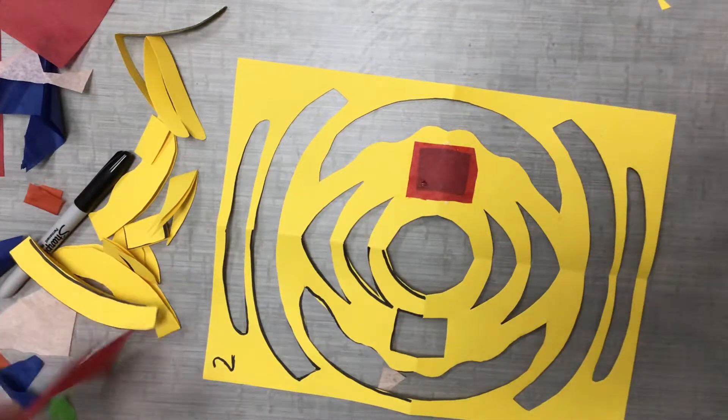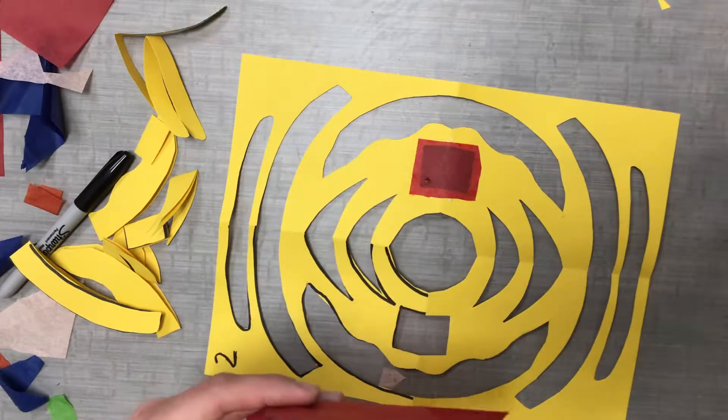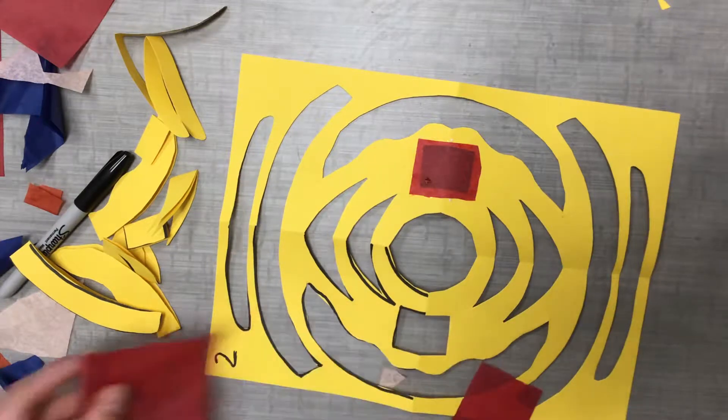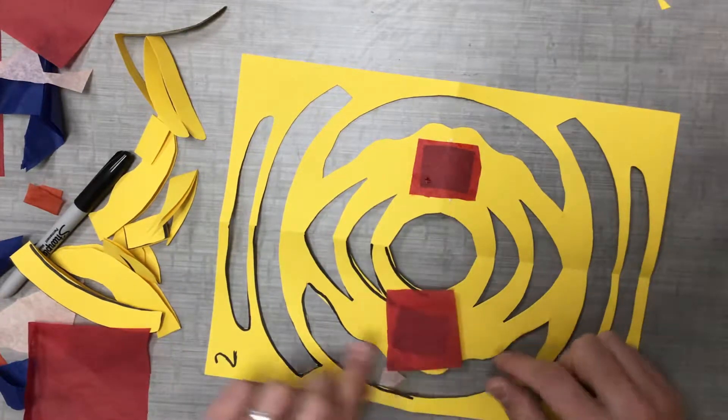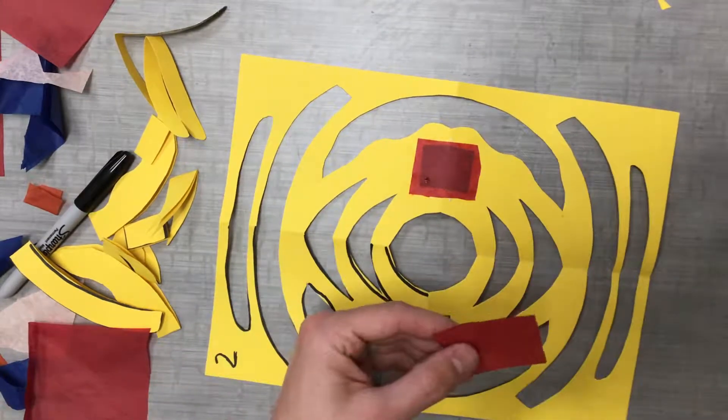Then I'm going to do the same thing over here on this side. So let me cut out this piece. Let me see if it fits. And it's too big because it's coming onto here. So let me make it a little smaller.